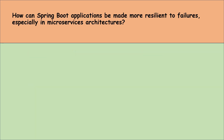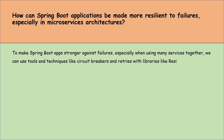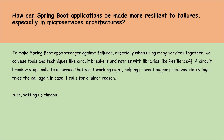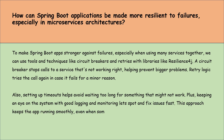How can a Spring Boot application be made more resilient to failures, especially in a microservices architecture? To make Spring Boot apps stronger against failures, especially when using many services together, we can use tools and techniques like circuit breakers and retries with libraries like Resilience4j. A circuit breaker stops calls to a service that isn't working right, helping prevent bigger problems. Retry logic tries the call again in case it fails for a minor reason. Setting up timeouts helps avoid waiting too long for something that might not work. Keeping an eye on the system with good logging and monitoring lets us spot and fix issues fast, keeping the app running smoothly even when some parts have trouble.